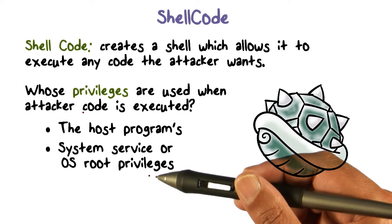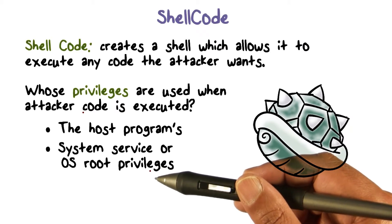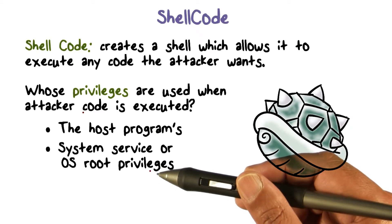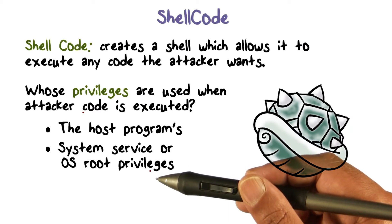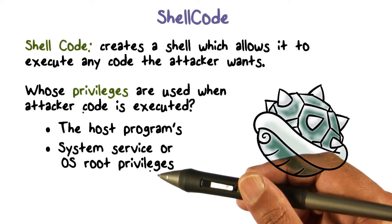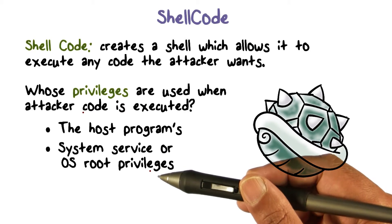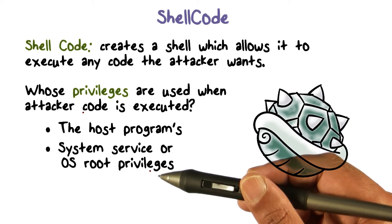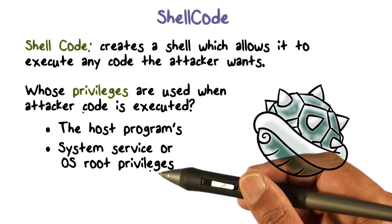The attacker used a vulnerable program, used the buffer overflow idea, transferred control to its own code — the shellcode. The shellcode, let's say, launched a command shell. The command shell can now start whatever program it wants to, and that program would run on behalf of the host program's owner or group privileges. So the attacker has come in and effectively become you — either the system or a particular user who was running this vulnerable program.